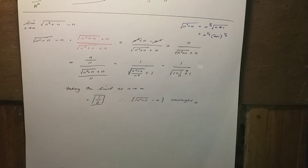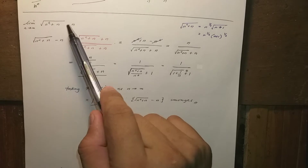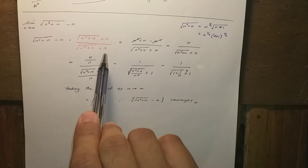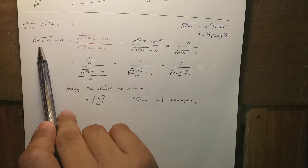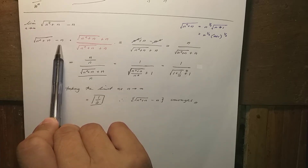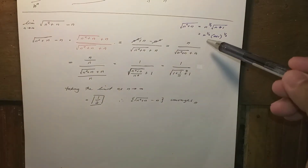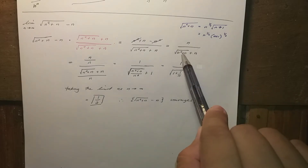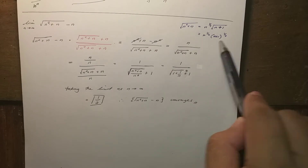In the last lecture we tackled this kind of expression. There was a little bit of error in my solution regarding that. So let's see the solution to start. This expression — I multiply by the conjugate, and then we arrive at this expression.